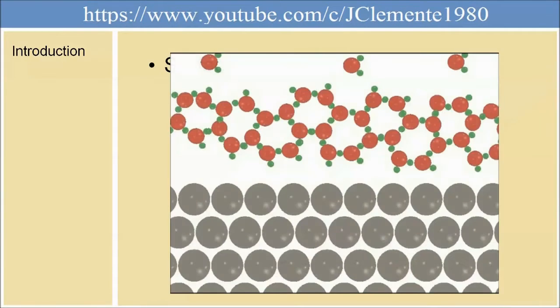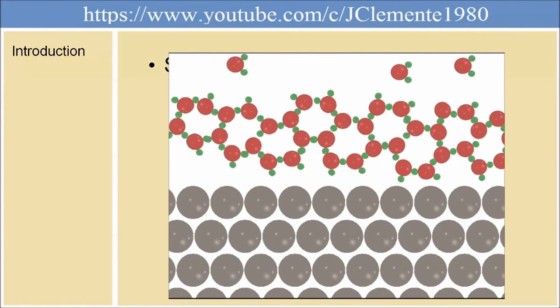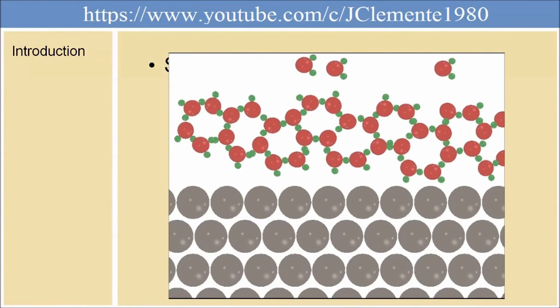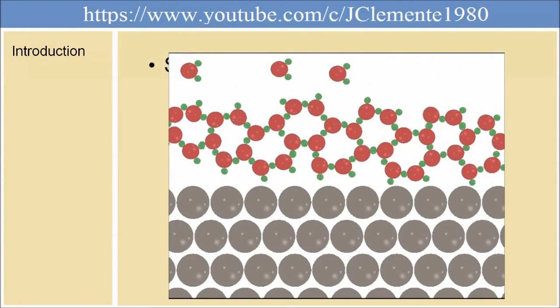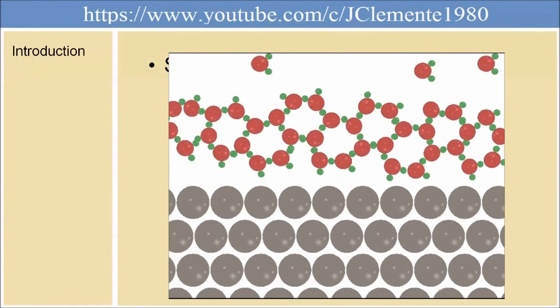However, if we don't have these Lewis sites, in order to minimize its energy, water will assume a nice structure on a few angstroms on the surface of the material. This will give very high contact angles.